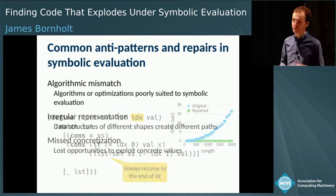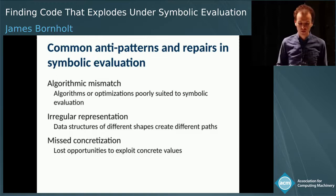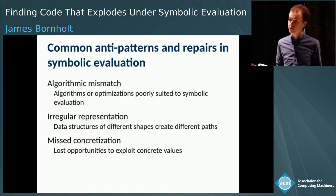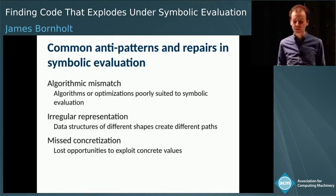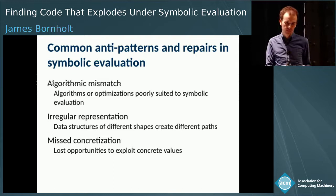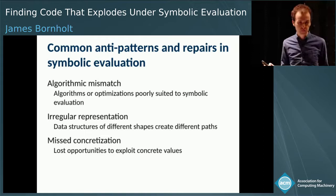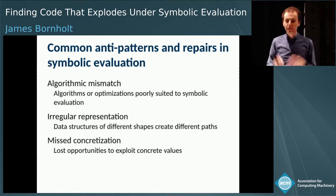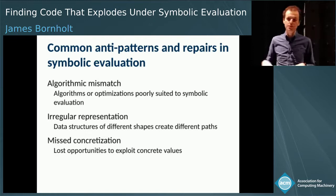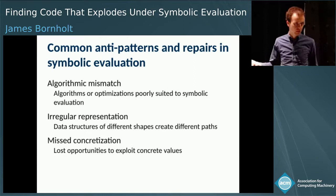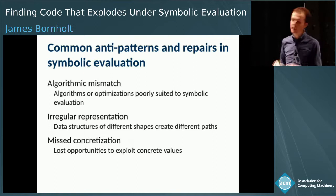That's one example of an anti-pattern we call an algorithmic mismatch. The other two common anti-patterns are: an irregular representation — similar to algorithmic mismatch but for data structures, where optimizing for space makes data structures irregular, whereas in symbolic code it's often better to waste space to keep all data structures the same size; and a missed concretization — where you know a variable can only be a limited set of values (like zero or one) but the evaluation engine doesn't, so explicitly concretizing those values makes things much faster.